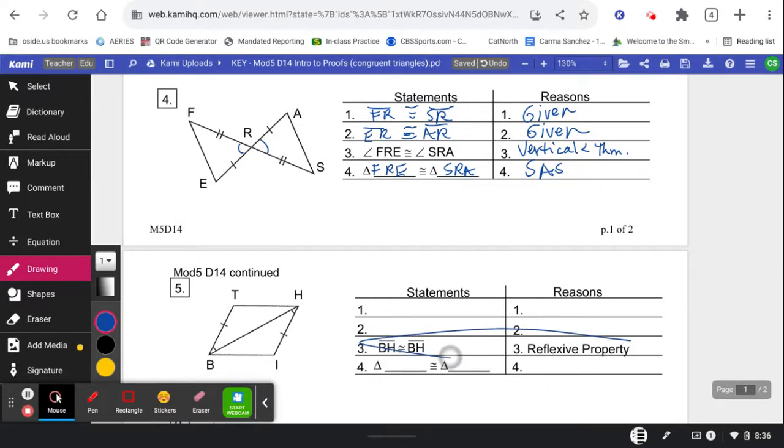Okay, notice this one already has the reflexive side mentioned here third, so we just need to put the other two givens. So side TB is congruent to side IH. And angle - we can't just call it angle B and angle H because it's a shared vertex, we have to call it a three letter name - TBH is congruent to angle IHB. And then it does the reflexive side because it's equal to itself. And so triangle TBH is congruent to triangle IHB by side angle side.